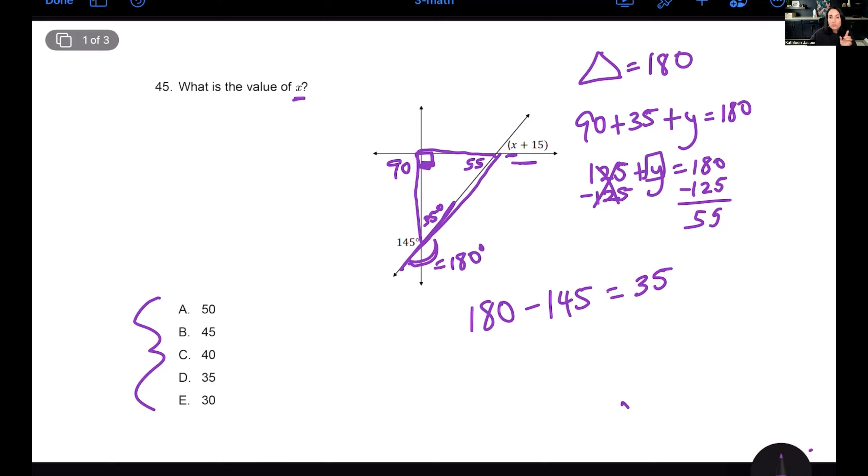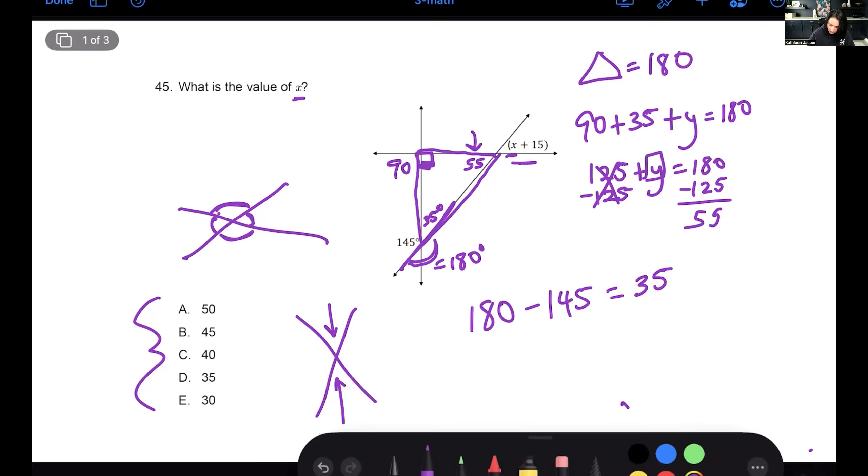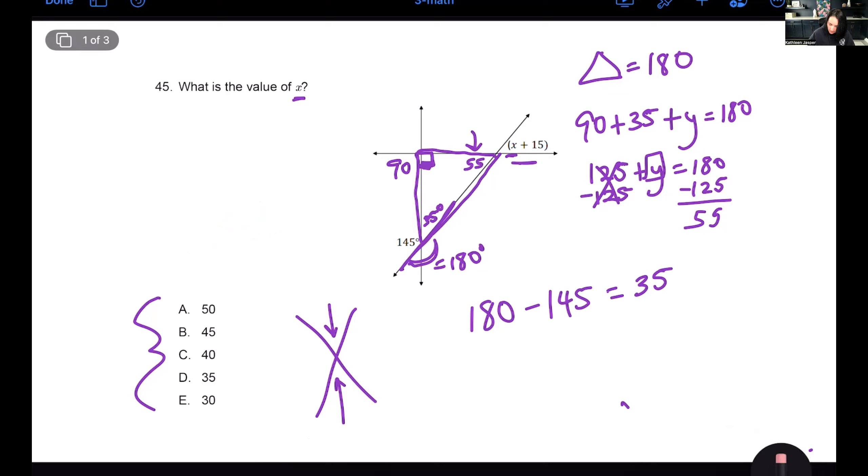So not only are we doing geometry here, we're also doing algebra because we're going to solve for y. I isolate this y here by subtracting 125 because that's a positive 125. And whatever I do to one side, I have to do to another. So I subtract 125. In this case, 10 minus five is five and seven minus two is five. In this case, this angle here is now 55 degrees.